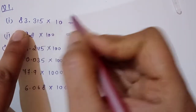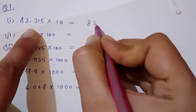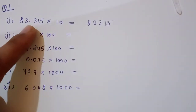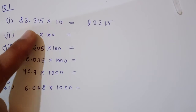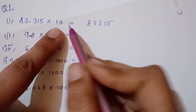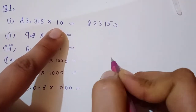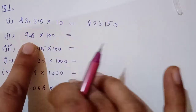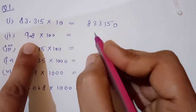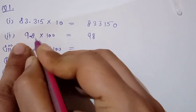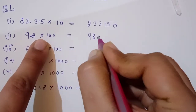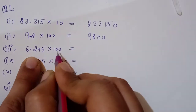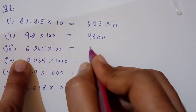I will write down the number the same — 83315. I have taken all the digits; I am not putting the decimal right now. When we multiply by 10, I will put one zero. When multiplying by 98, which is two digits, I put two zeros at the end.